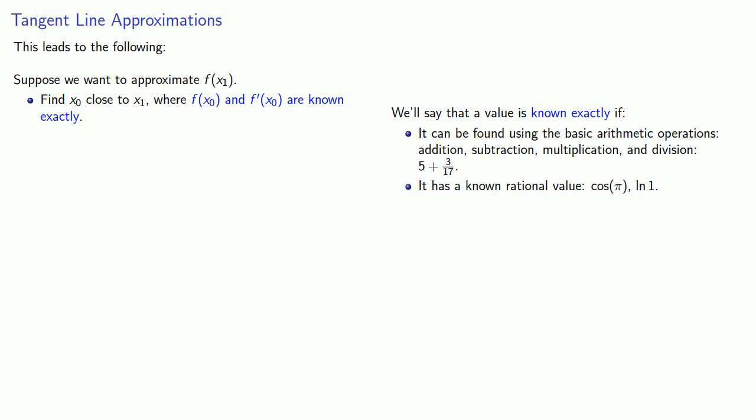Or, it has a known rational value. For example, cosine of pi, log of 1. Or, it has a value that you are given as exact, like e or pi. Any other value, we'll say, is not known exactly. For example, square root of 2, sine of 5, e squared. Because these can't be found using the basic arithmetic operations, because these don't have a known rational value, and because we're not given these as exact values, these, for our purposes, are not values that we know exactly.